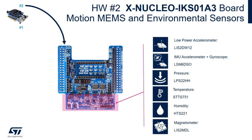The second board we'll use, plugged on top of the Nucleo, is the X-Nucleo-IKS01A3, the expansion board with the latest sensors from ST. On it we have: the LIS2DW12, an ultra-low power accelerometer for motion sensing with embedded features and multiple low-power and low-noise modes; the LSM6DSO, an inertial measurement unit combining a 3-axis accelerometer and 3-axis gyroscope with best-in-class power and noise performance and an embedded programmable finite state machine; the LPS22HH, a high-accuracy ambient pressure sensor; the LIS2MDL, a 3-axis magnetometer for sensing magnetic fields including Earth's magnetic field for e-compass applications; the STTS751, a high-accuracy contact temperature sensor; and the HTS221 for ambient temperature and relative humidity.